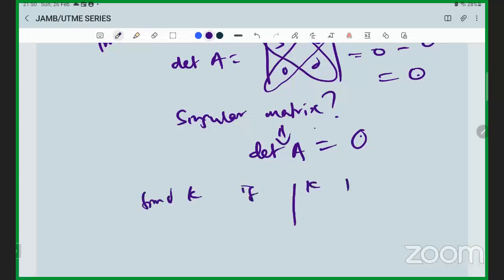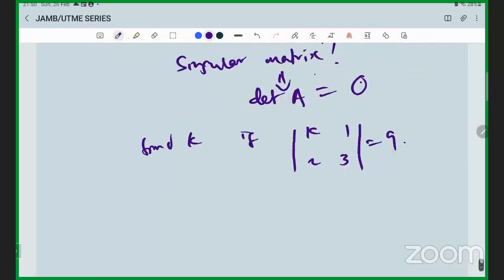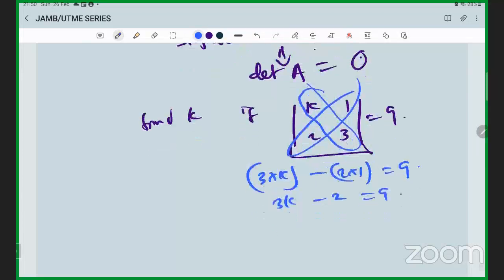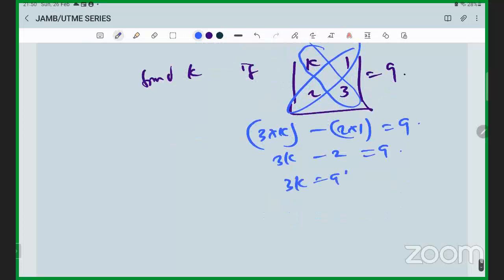Find k if the matrix [k, 2; 1, 3] equals 9. For this determinant 2 by 2, element 3 times k minus element 2 times 1 is equal to 9. 3k minus 2 equals 9, 3k equals 9 plus 2, 3k equals 11.